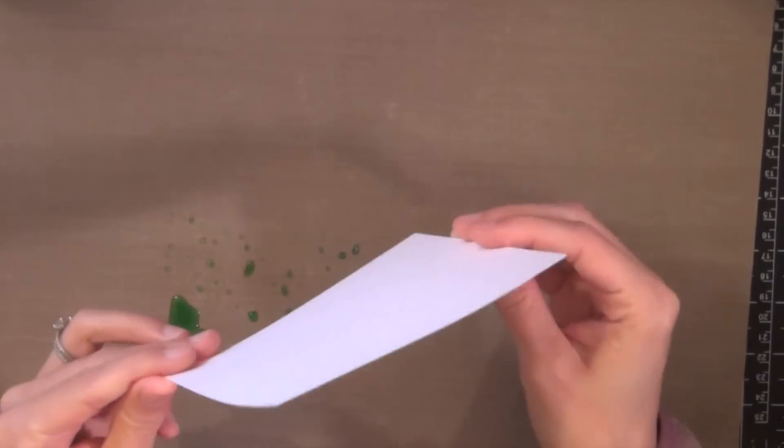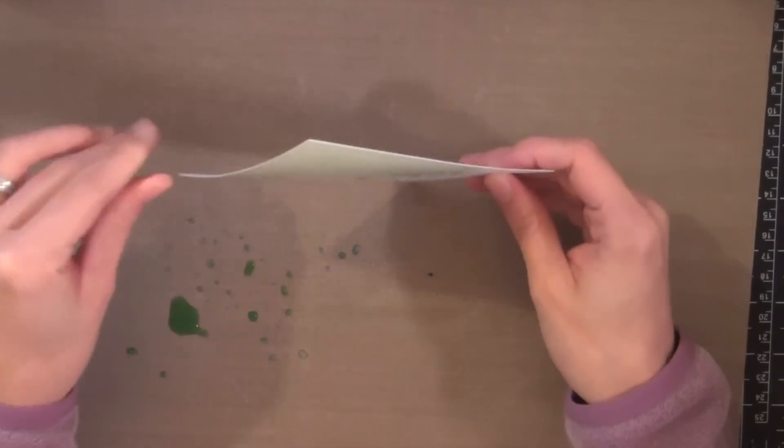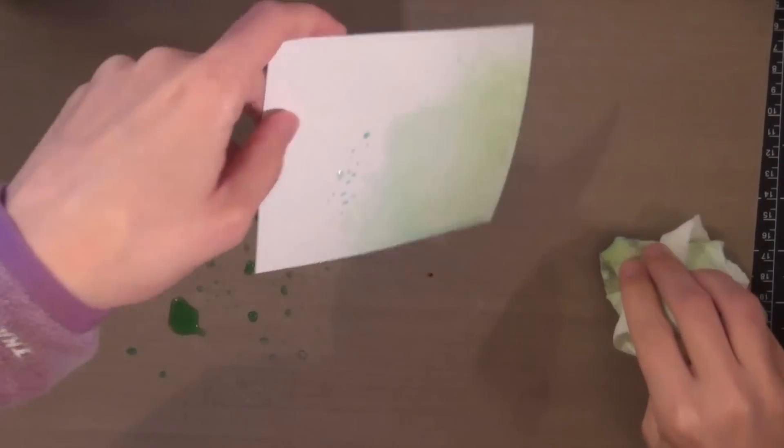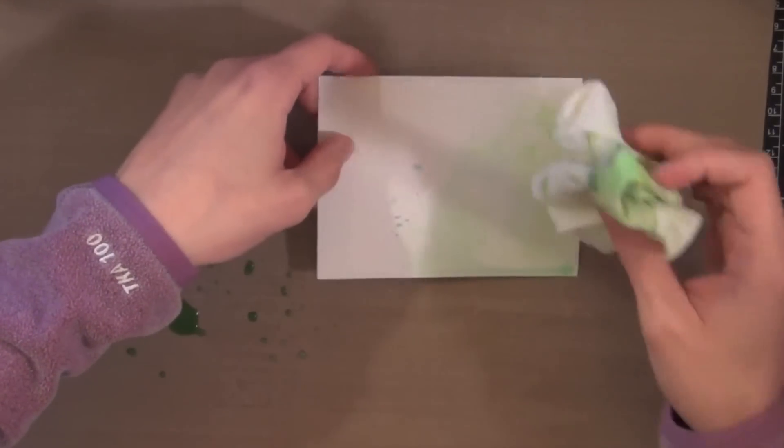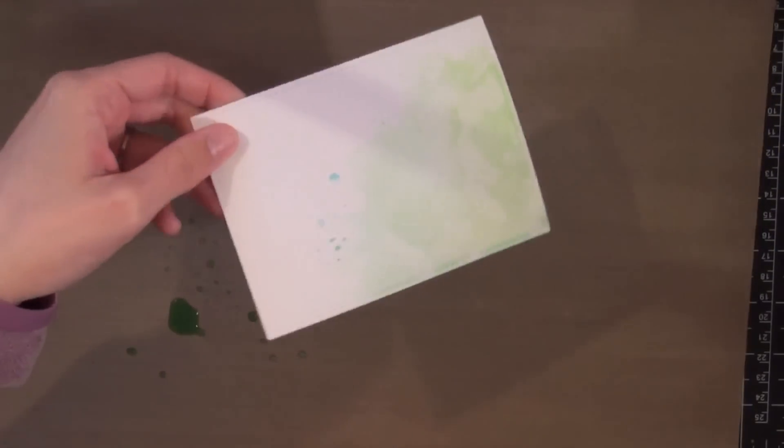I used one of the larger stitched rectangle dies to create the front of my card and I'm just tapping it into the ink and then I'm going to tap a dry paper towel just to remove a little bit of that ink.